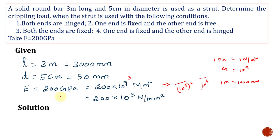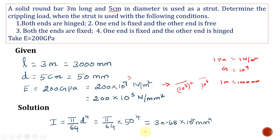To find the crippling load, we first need to find the moment of inertia of the cross section. Since the cross section is circular, the moment of inertia is π/64 × D⁴. With D = 50 mm, substituting this value gives a moment of inertia of 30.68 × 10⁴ mm⁴.